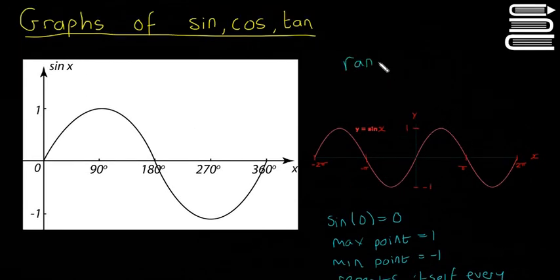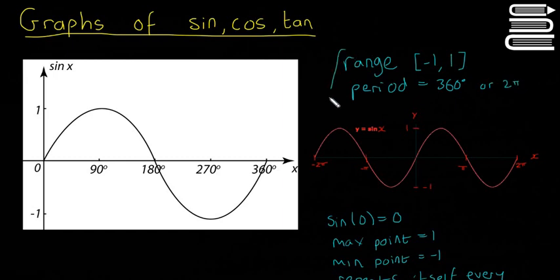I'm going to write the range is minus 1 and 1. So that means the maximum point is 1, the minimum point is minus 1. And the period equals 360 degrees or 2 pi. Those are the two most important ones. That's about sin x.